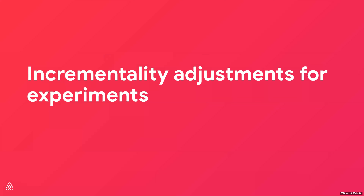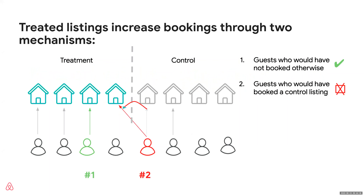We also have to think about incrementality on the experimentation front to avoid drawing wrong conclusions. Imagine experiments where we're treating a certain set of listings — giving them some feature, maybe a badge, something that makes them look better, and it really works: these listings get booked a lot more. Two things can happen: on one hand, these listings attract guests who would not have booked otherwise — that's good incremental variation. On the other hand, these listings can steal bookings from guests who would have otherwise booked a control listing. Those bookings are not incremental — they're just stolen. This overestimates the effect, and we call it cannibalization or interference bias.